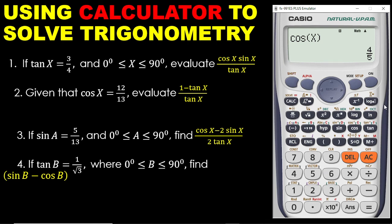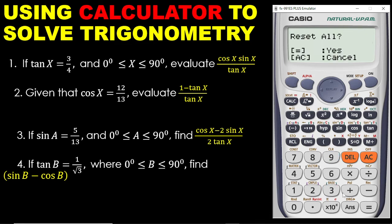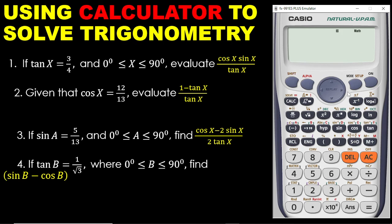Remember to always clear the calculator. You press Shift, 9, 3, equal to, and then AC. So I have cleared my calculator.